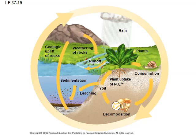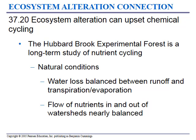Here's your phosphorus cycle: locked up in rocks, the weathering and geological uplifting of rocks releases it into the water. Plants can take it up; decomposers can release it again; animals eat it and then decompose. The Hubbard Brook Experimental Forest is a long-term study of nutrient cycling — they found that when they added carbon or nitrogen, nothing much happened, but when they added phosphorus, they got an algae bloom — showing that phosphorus is very often the limiting factor.